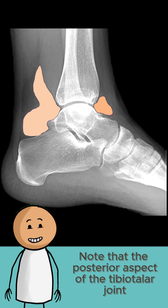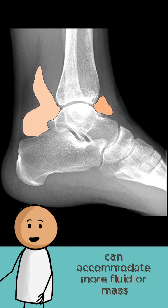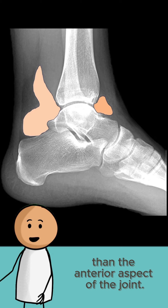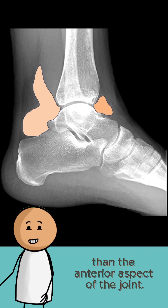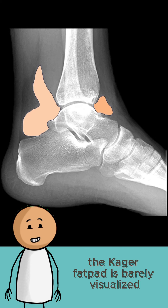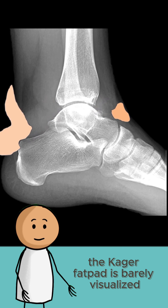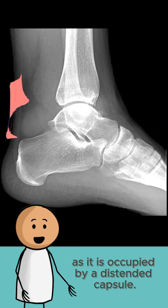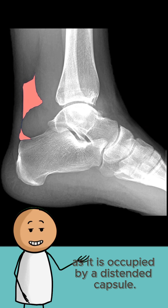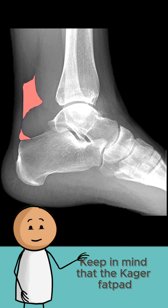Note that the posterior aspect of the tibiotalar joint can accommodate more fluid or mass than the anterior aspect of the joint. In this case, the Kager's fat pad is barely visualized as it is occupied by a distended tibiotalar capsule.